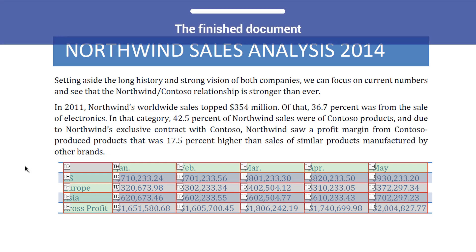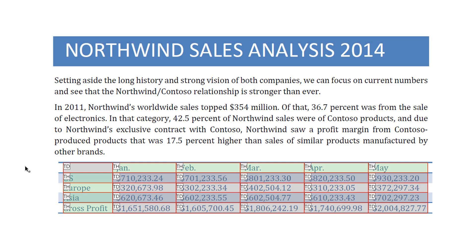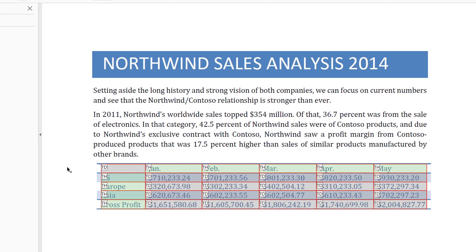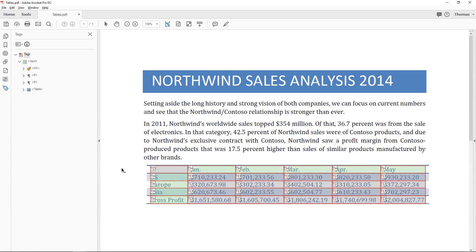Here is the finished product. Row and column header cells are indicated with TH tags, which differentiates them from the data cells in the table. This table will now pass the checker.